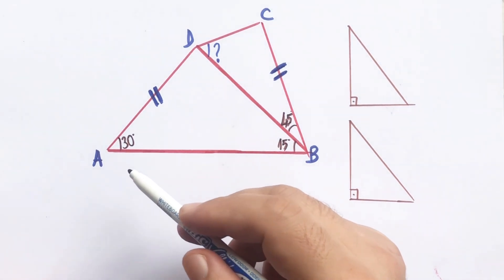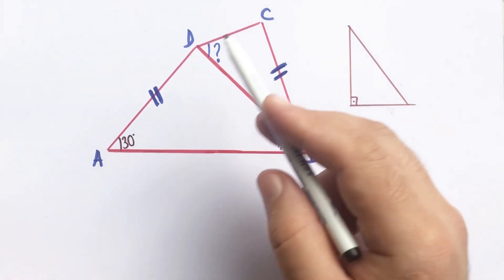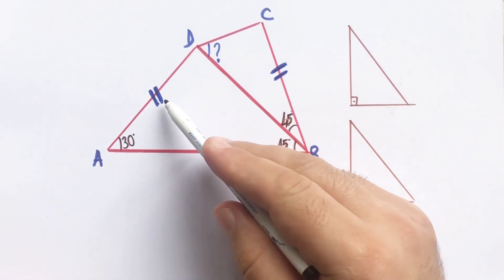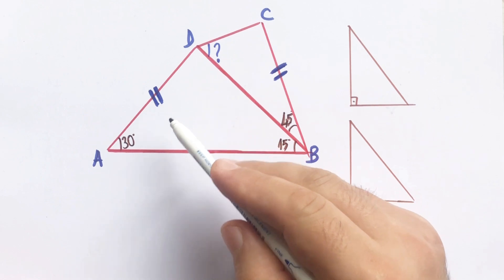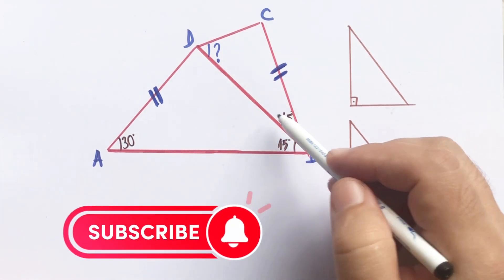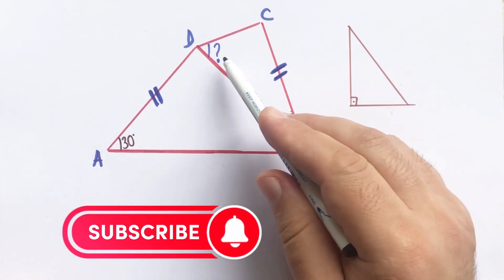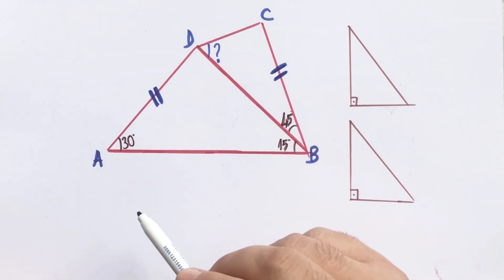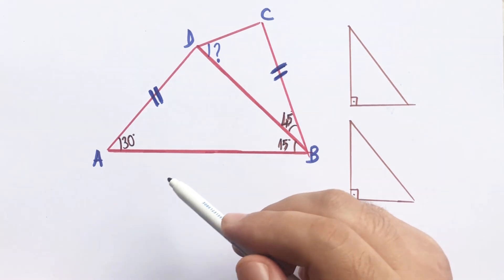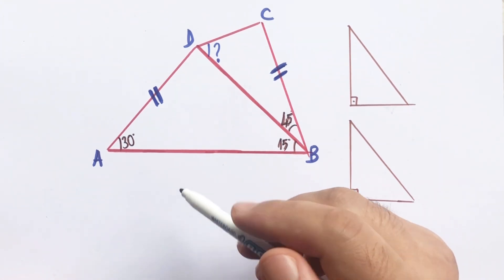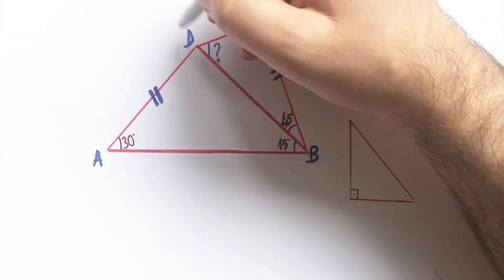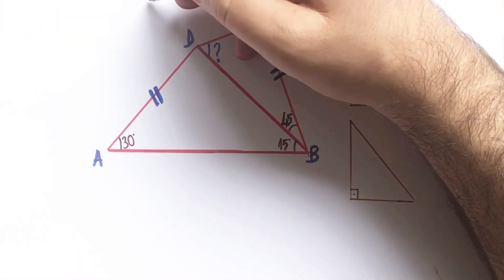Hello everyone. In this video we have one quadrilateral — these two lengths are equal, these angles are given, and we will calculate the missing angle. Okay, first step: